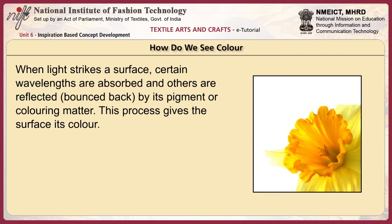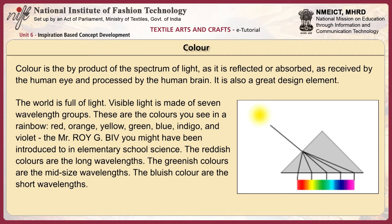When light strikes a surface, certain wavelengths are absorbed and others are reflected or bounced back by its pigment or coloring matter. This process gives the surface its color. Color is the by-product of the spectrum of light as it is reflected or absorbed, received by the human eye and processed by the human brain. It is also a great design element.